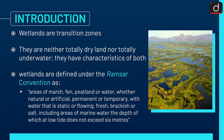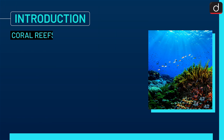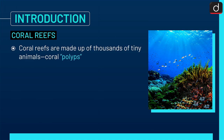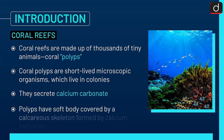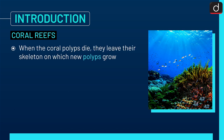Now let's move on to coral reefs. Coral reefs are made up of thousands of tiny animals called coral polyps. Coral polyps are short-lived microscopic organisms which live in colonies; they secrete calcium carbonate. Polyps have a soft body covered by a calcareous skeleton formed by calcium carbonate. When the coral polyps die, they leave their skeleton on which new polyps grow.